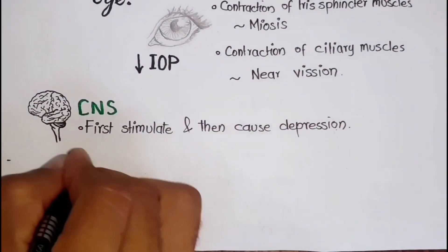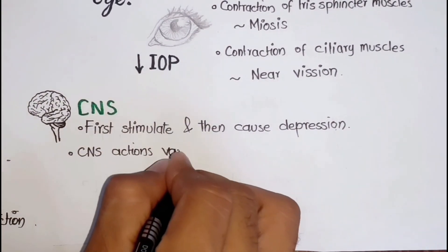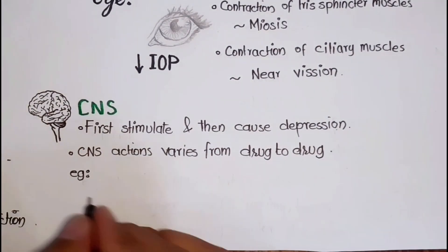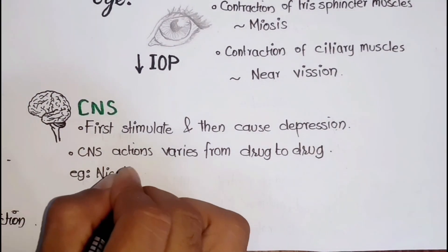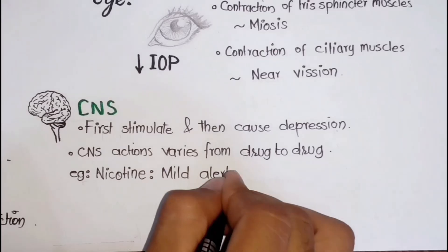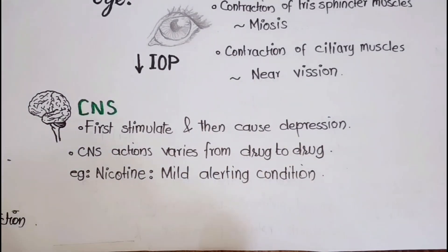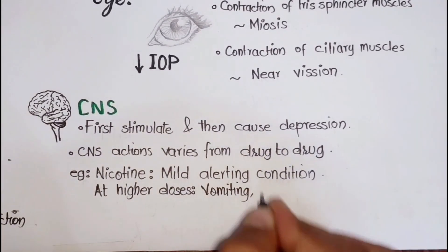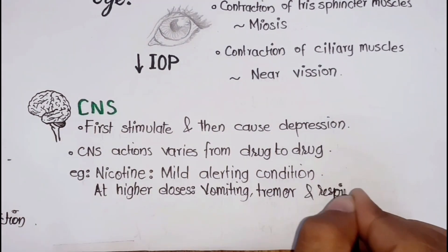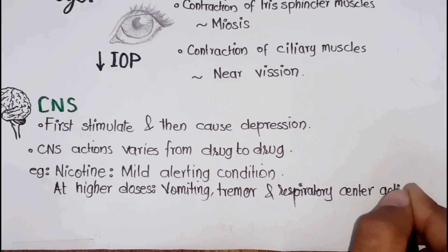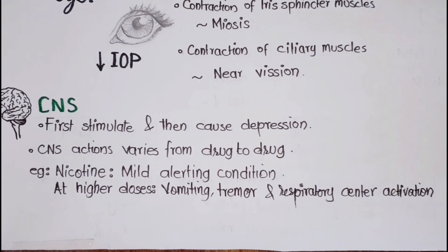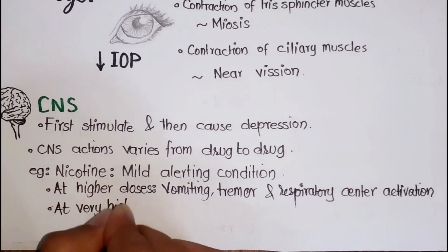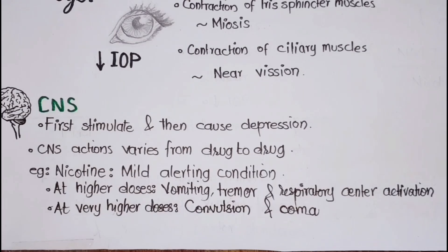Action on the central nervous system varies from drug to drug. For example, nicotine causes a mild alerting action, while at higher doses nicotine causes vomiting, tremor, and respiratory center stimulation. At very high doses, nicotine is responsible for effects like convulsion and coma.